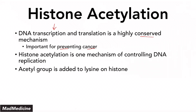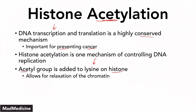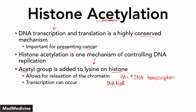Histone acetylation consists of an acetyl group — hence the name — being added to the lysine residues on the histone. When you add this acetyl group, you allow the histone to relax the chromatin, and that relaxation allows transcription to occur. So histone acetylation causes an increase in DNA transcription. Compare that to DNA methylation, which causes a decrease in DNA transcription. Histone acetylation and DNA methylation are essentially inverses of each other.